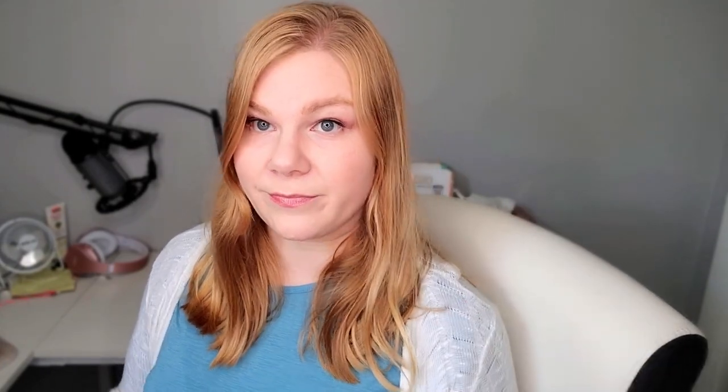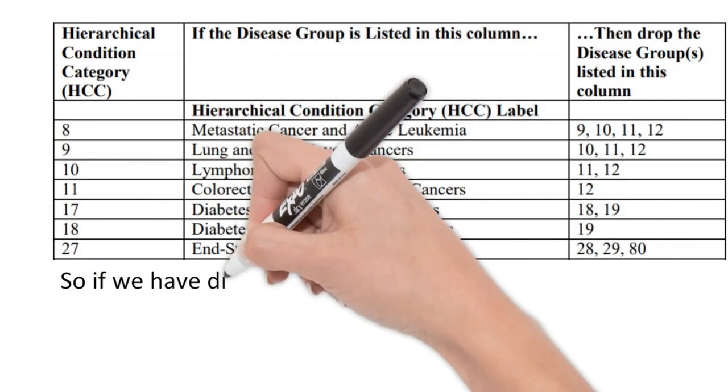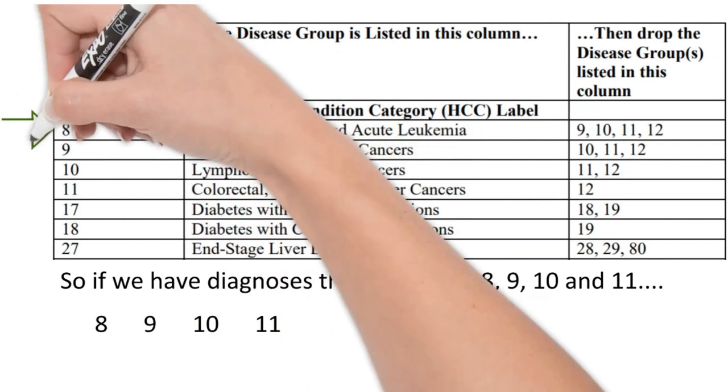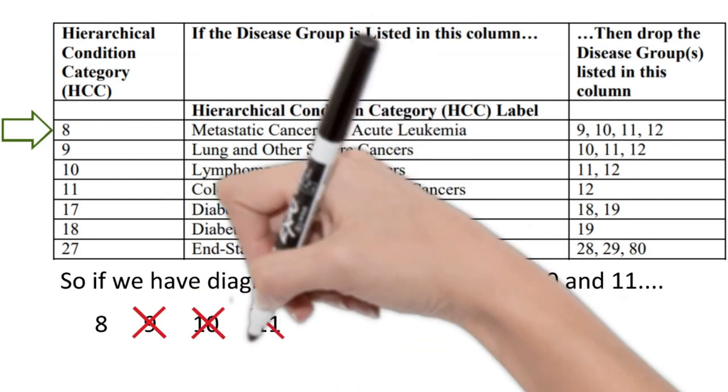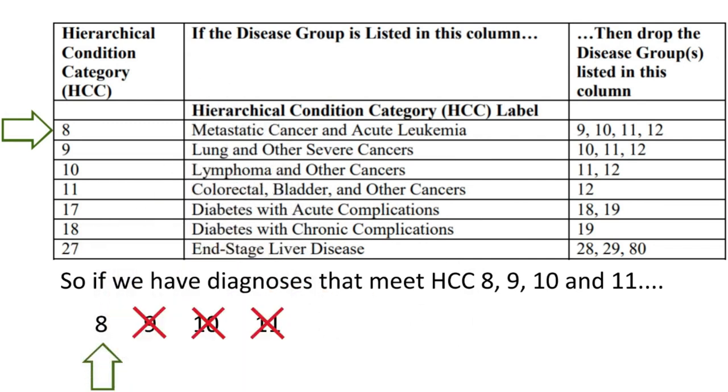One of the first things students told me tripped them up on the CRC exam was the Trump lists — and it has nothing to do with Donald Trump. The Trump lists are HCCs that include other HCCs. For example, if you have diagnoses that meet the criteria for HCCs 8, 9, 10, and 11, and HCC 8 says to drop HCC 9, 10, and 11 — you get rid of them, drop them out — and you just report HCC 8. When they ask which HCC to utilize, you say HCC 8, because it includes the calculations for HCCs 9, 10, and 11. HCC 8 trumps the rest.